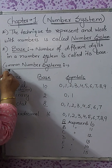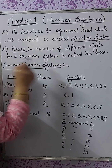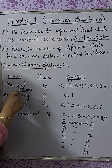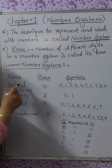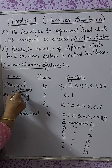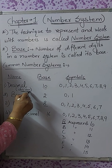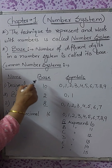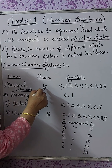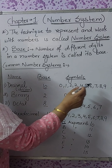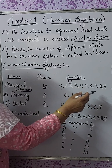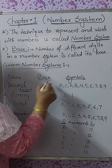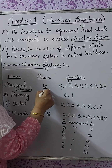We have to study four common number systems. The very first one is the decimal number system. Its name is derived from the Latin word 'decum'. Its base is 10, which means it has 10 different digits or symbols — that is why its base is 10.